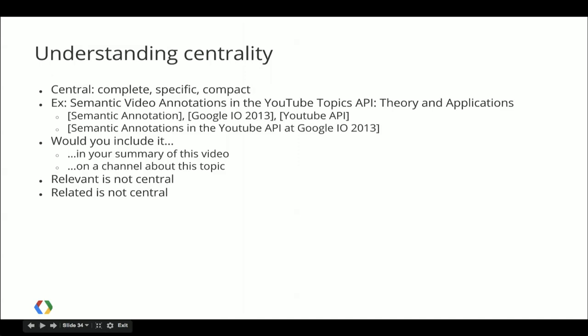For example, if we had a video of this talk and wanted to annotate it, we would likely choose semantic annotation, Google I/O 2013, and YouTube API — because these would be complete, specific, and compact. However, if we had a single entity for this talk in Freebase, we would gladly replace all three with that one entity. A layman's way to put it: an annotation is likely part of a central set if you would include the name of the entity in a one-sentence description of the video, and if you are curating a YouTube channel about this topic, you would choose this video as a canonical example. If you answer both questions yes, independently, then this is likely a central annotation.